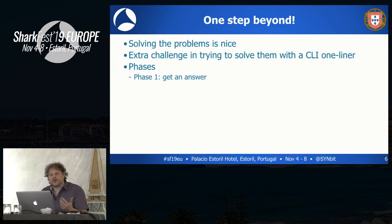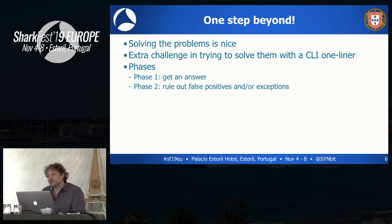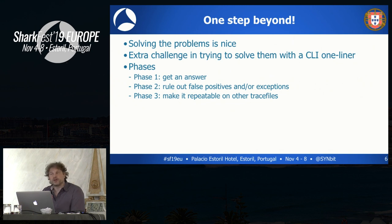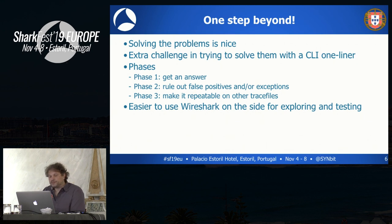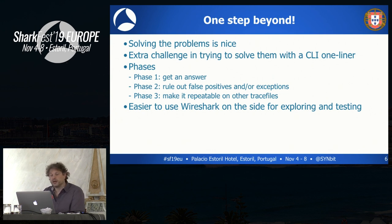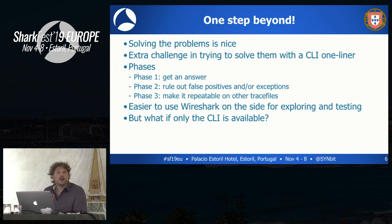I see a couple of phases in solving with T-Shark. In the first phase, you need to get an answer for the specific question you have. But I also like to make sure I rule out any false positives and exceptions. I'd also like to make it repeatable for other trace files — not only for this trace file, but as a general answer to a general question, which makes it useful for different situations. Of course, it's easier if you have Wireshark at hand for navigation and exploring. I combine using Wireshark and T-Shark a lot together. But if you only have the CLI available, it would be nice to know how to navigate a trace file from the CLI as well.